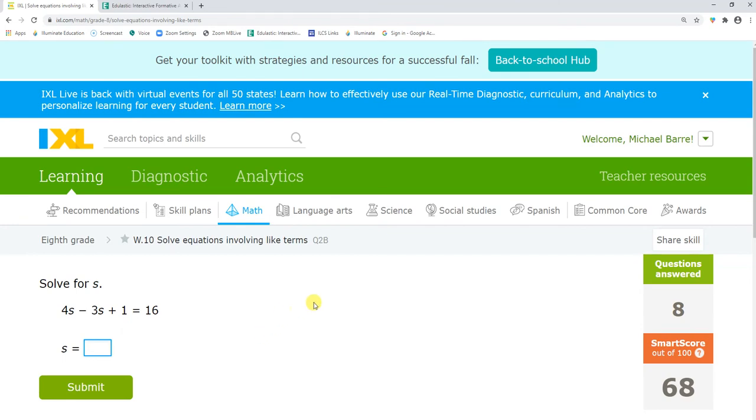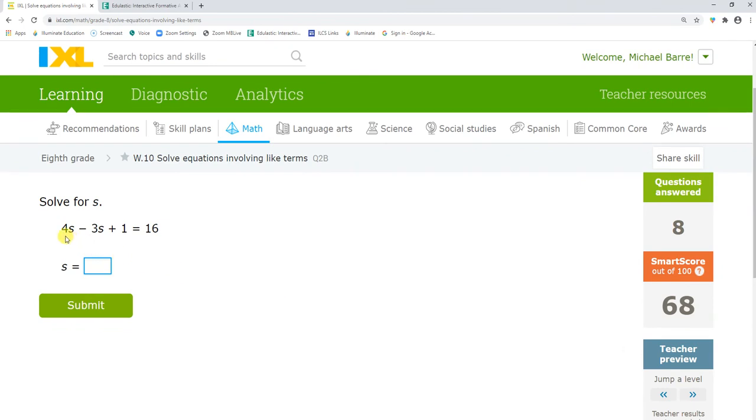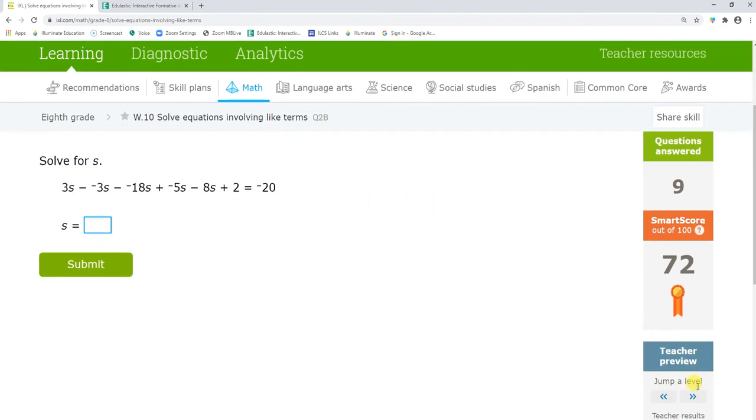One-step equation. This one's actually an easier one. This is just a combined terms and then one-step equation. 4s minus 3s is 1s. So, s plus 1 equals 16. Minus 1 minus 1. S equals 15. Okay, so this is a whole bunch of combining terms and then it turns it into a two-step equation. Let's jump a level.